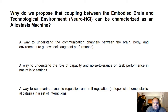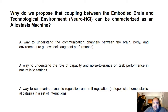There are three reasons for this. The first is that it's a way to understand the communication channels between the brain, body, and environment — for example, how tools augment performance. The second reason is that it's a way to understand the role of capacity and noise tolerance on task performance in naturalistic settings, where capacity means information channel capacity and noise tolerance means the channel is tolerant to noise. The third reason is that this is a way to summarize dynamic regulation, self-regulation, and a set of interactions.